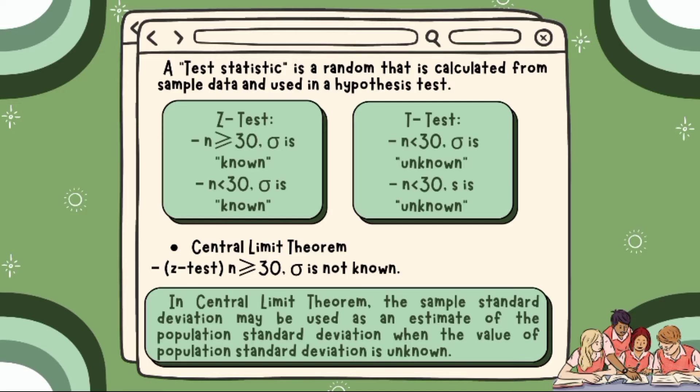We also have the central limit theorem. Based on the central limit theorem, when the sample size is extremely large and the variance is unknown, we'll be using a z-test. In the central limit theorem, the sample standard deviation may be used as an estimate of the population standard deviation when the value of the population standard deviation is unknown.